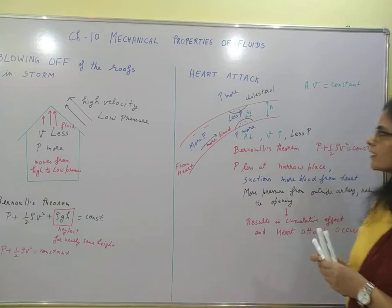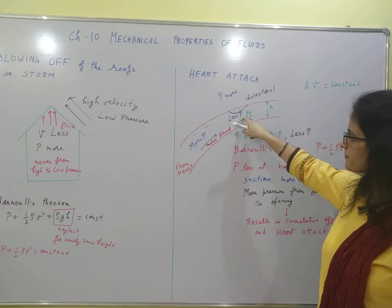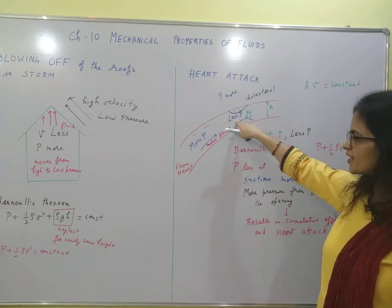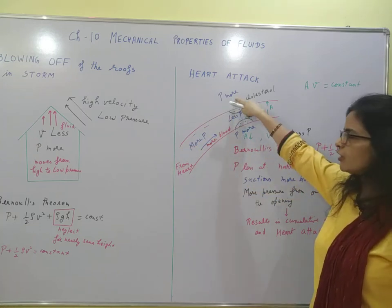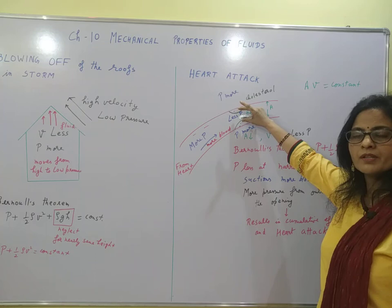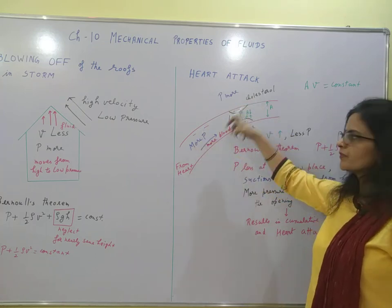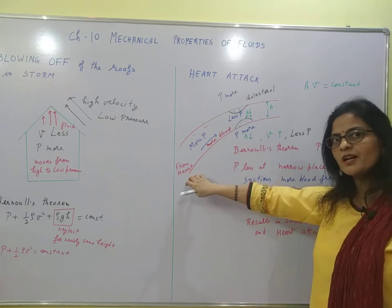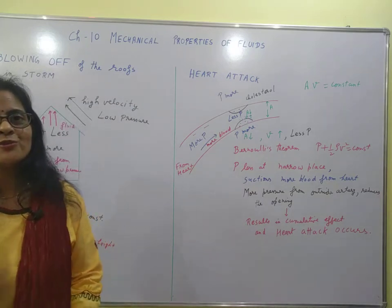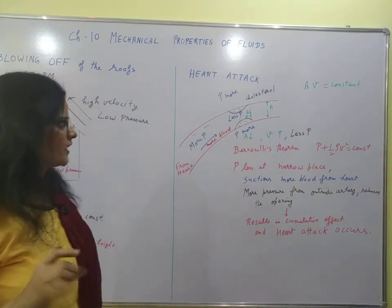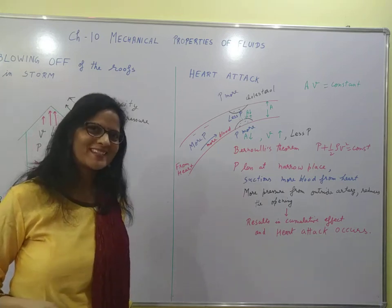To summarize: cholesterol is deposited, the opening is smaller, velocity increases, pressure decreases, and more blood is pulled from the heart side. Outside pressure is greater, so the constriction becomes even smaller, requiring still more blood from the heart — creating a cumulative pressure on the heart, resulting in a heart attack. This is how we can relate biology to physics.